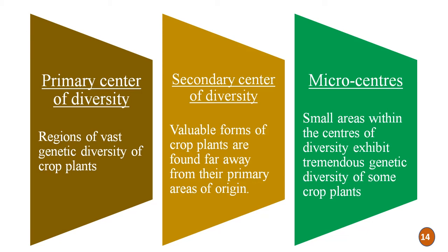There are three types of centers of origin or centers of diversity. First are primary centers of diversity — regions of vast genetic diversity of crop plants, or original homes of the crop plants. Second are secondary centers of diversity — where valuable forms of crop plants are found far away from their primary areas of origin. Third are micro centers — small areas within the centers of diversity that exhibit tremendous genetic diversity of certain crop plants.